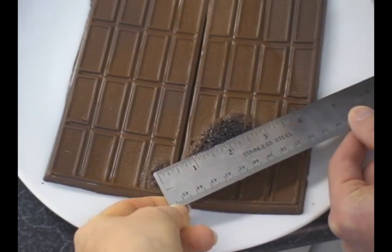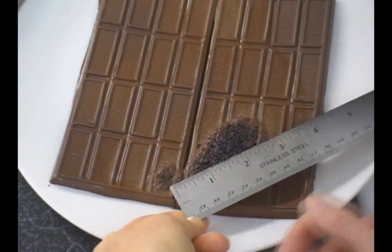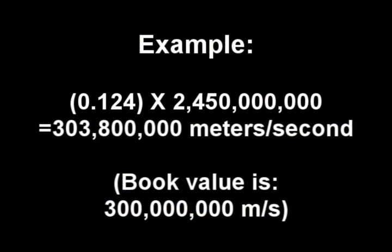The speed of light has been measured at 300 million meters per second. What number did you get? For a distance of 6.2 centimeters, we get 303 million meters per second, which is very close.